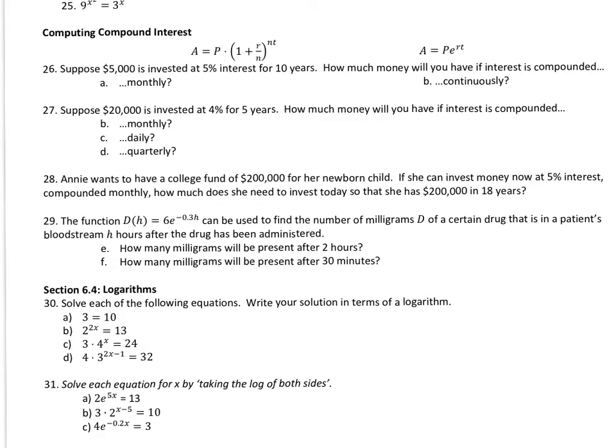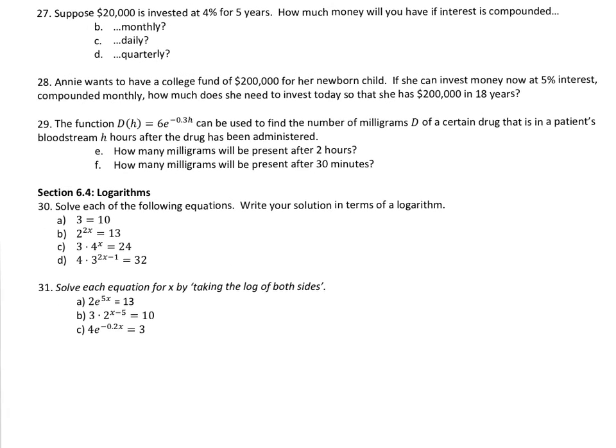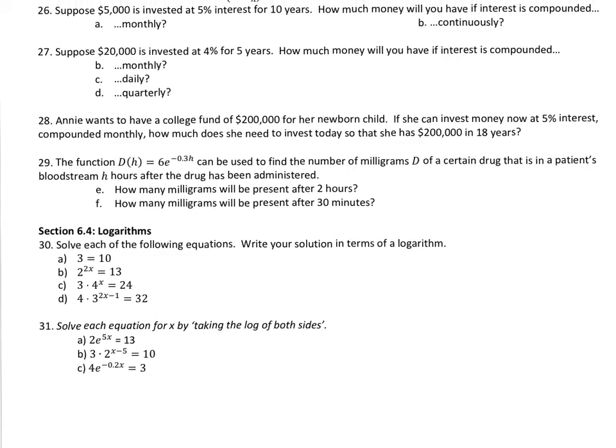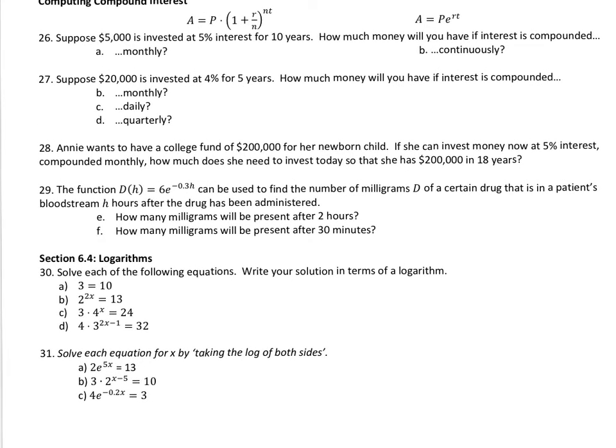27 works the exact same way. Now, when you go to number 28, they say they want to have $200,000. That's the amount. And they're going to compound monthly, so we're using this left formula. So it's going to be 200,000 equals P times 1 plus, what's the rate? 5%, 0.05. T, how many years? 18. And they're compounding monthly, so you get 12 as that N again.